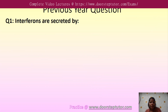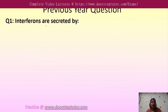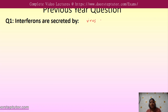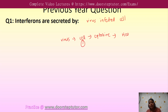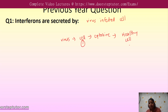Looking at a previous year question: interferons are secreted by virus-infected cells. When a virus infects a cell, that infected cell releases cytokines that go and bind to healthy cells which are not virus-infected. This is how they protect healthy cells from viral infection.